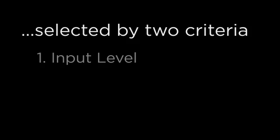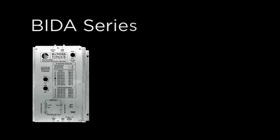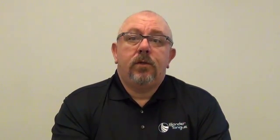The other parameter in selecting the proper amplifier is the frequency range, or the number of channels that you want to amplify. In the BIDA series, the lowest frequency range available is 550 MHz, which covers 77 channels. Remember, when dealing with digital channels or a mix of digital and analog channels, you may have more than 77 programs because digital channels can have more than one program on them. So 550 MHz handles 77 physical channels, whether they are analog or digital.